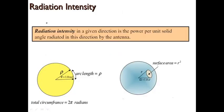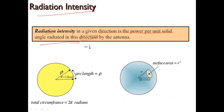Our next parameter is radiation intensity. The definition is: radiation intensity in a given direction is power radiated per unit solid angle in a particular direction. Simply put, it is the maximum emission of radiation to the possible extent by an antenna — where the antenna can emit the maximum possibility of radiation.